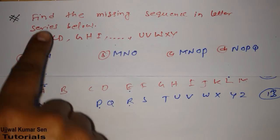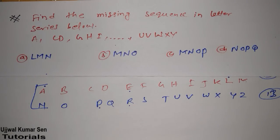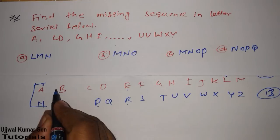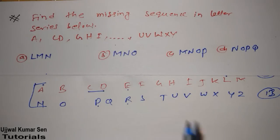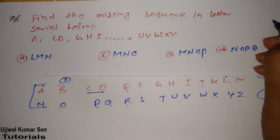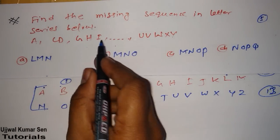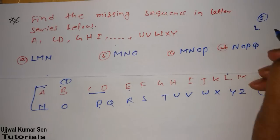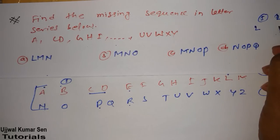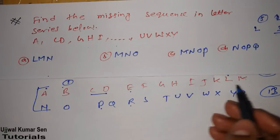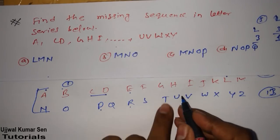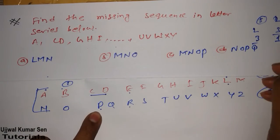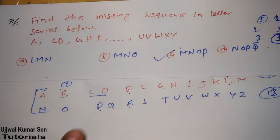The next question asks: find the missing sequence in the letter series. They have given: A, CD, GHI, and we must find the next group. So: A is one letter, then after one gap we get CD — two letters. After a two-letter gap we get GHI — three letters. The pattern is: take one gap then two letters, two gap then three letters. So next we take a three-letter gap then take four letters — that gives us M N O P. So the answer is MNOP.